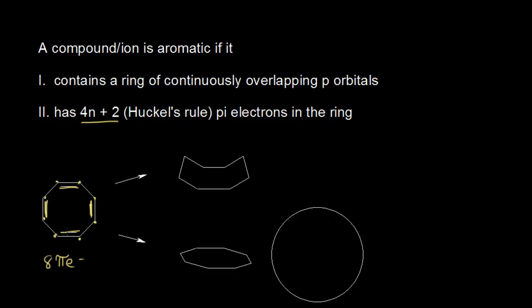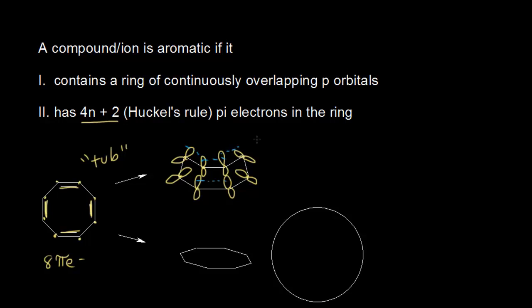The fact that cyclooctatetraene has 8 atoms in the ring means there's a little bit of angle strain in this molecule. One possible conformation for the molecule to adopt is what's called a tub conformation — you can see these two carbons can swing up on either side. Now if each carbon in the tub conformation is sp2 hybridized, I could draw a p orbital on each carbon. The problem is it's difficult for the p orbitals to overlap — it might be easy for some to overlap, but because of the tub conformation, it would be hard to get overlap of the other orbitals. So the molecule acts like it's not conjugated because it does have p orbitals, but they can't really overlap in the tub conformation.